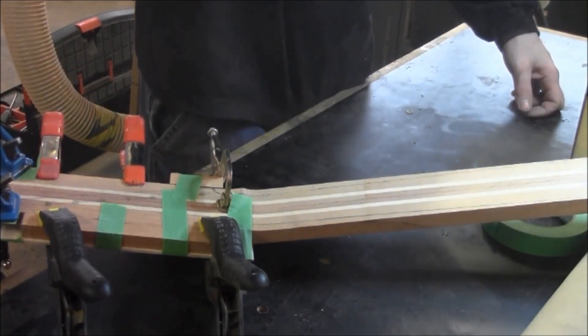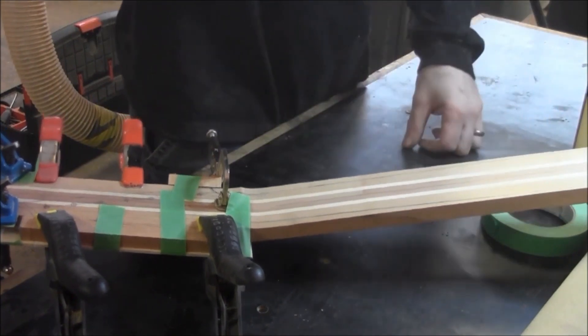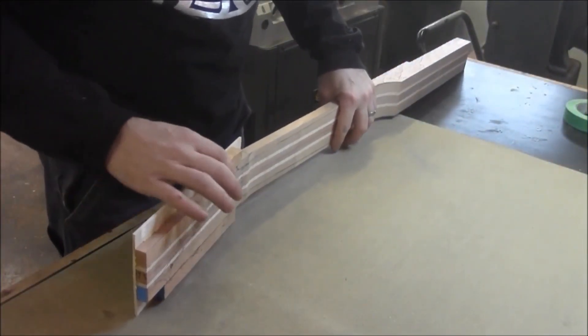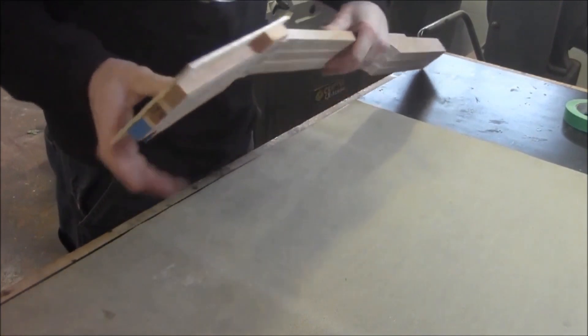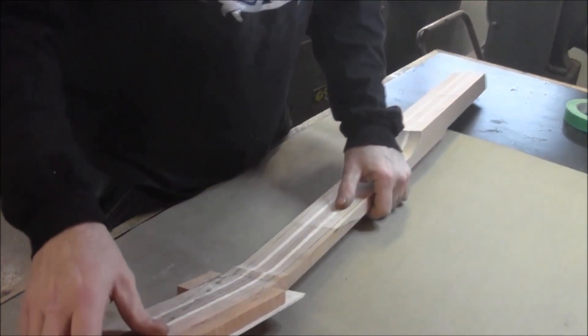We'll let that set up, then pop the clamps off, and we can start cutting the front profile for this neck. The glue is all set up here, and we're looking pretty good—nice and tight all the way around.